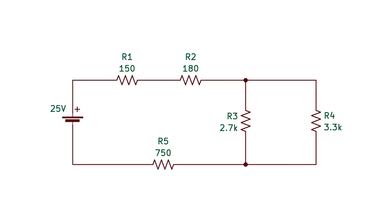Now let's make things a little more complicated. This is the kind of schematic textbooks and exams will throw at you. In this circuit we've been given the resistor values, and usually we'll need to find the voltage across all resistors and the current flowing through each. In order to do so, we need to familiarize ourselves with some rules and use deductive reasoning to narrow things down.